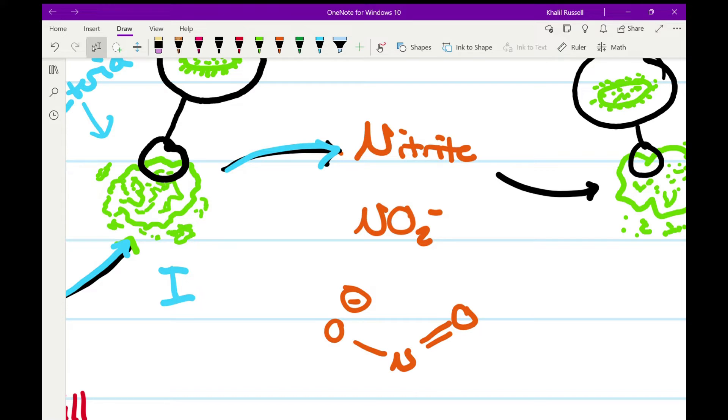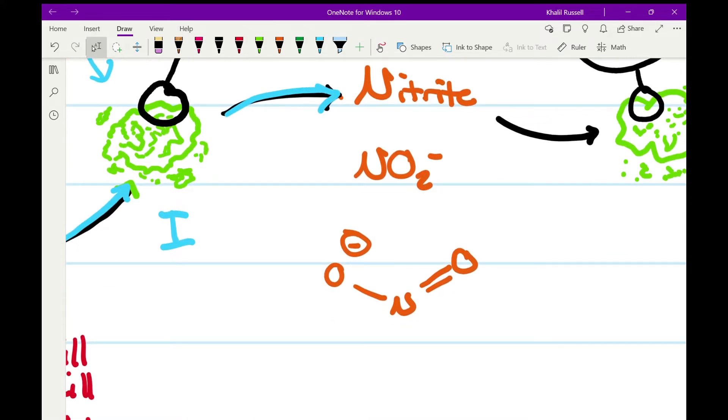So then nitrites. What are nitrites? Their chemical formula is NO2 minus. So it's one nitrogen atom and two oxygen atoms. What's important to note about this is that it's not quite as bad as ammonia, but it is worse than nitrates.